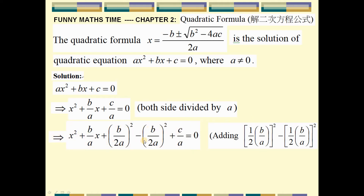We write b over 2a squared minus b over 2a squared, which is equal to zero. We then split this zero into two parts: one part is for the first two terms, and the other is the remaining term, which we move to the right hand side of the equality.